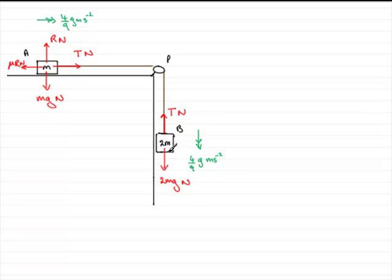So what we've got to do is find the tension in the string, and the best place to do that is by considering particle B. So to do that, I'm just going to say consider B. It helps the examiner know where we're coming from.